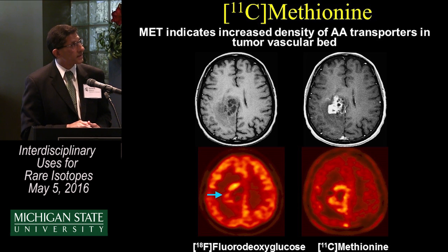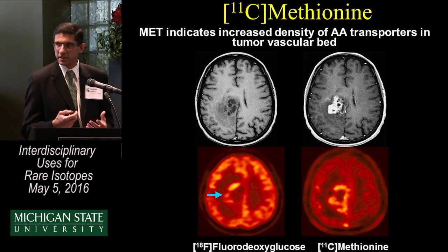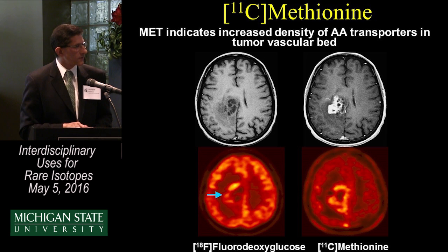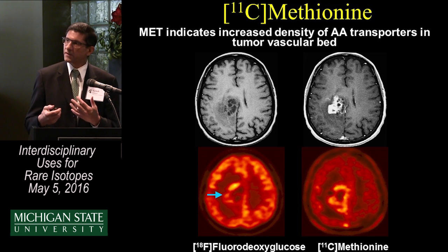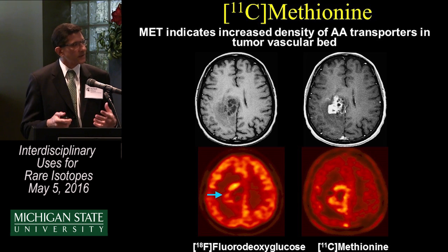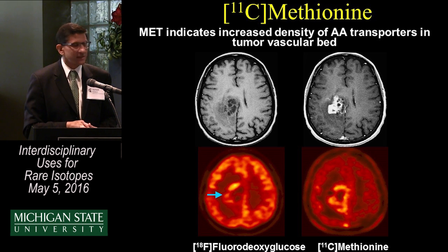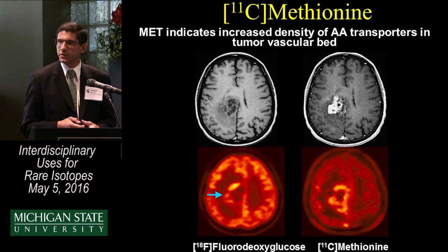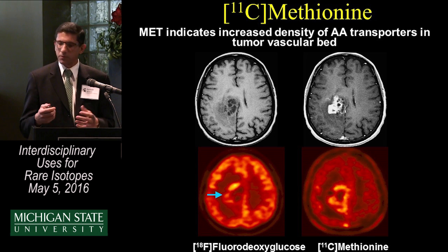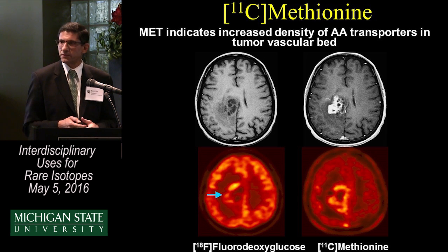C11 methionine is a radiotracer looking for increased activity of amino acid transporters in the vascular bed. There was a lot of promise at the time with methionine. On the left-hand side was a patient with a brain tumor — you can see the uptake with FDG versus methionine, which actually showed more uptake due to the focus on amino acids. But unfortunately, methionine never really caught hold due to a variety of limitations — an example of a radiotracer with a lot of promise that never came to fruition.